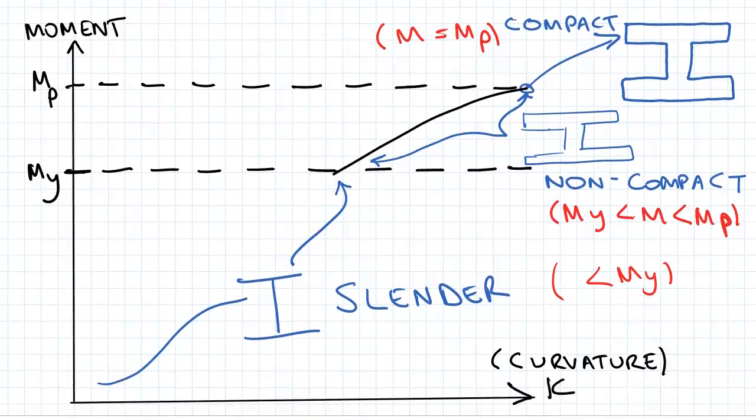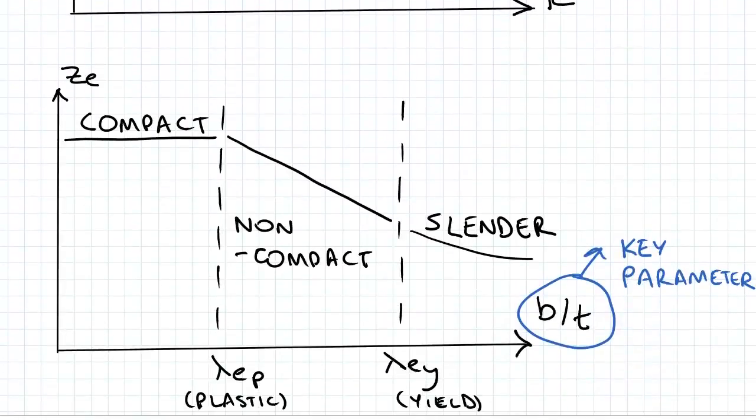Also, just to appreciate that further, we have the effective section modulus Ze graphed against b on t. That's the key parameter that really dictates whether we have a compact, non-compact, or slender beam.